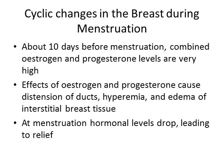Estrogen and progesterone levels change during menstruation, so they obviously cause breast changes during the menstrual cycle. About 10 days before menstruation, you're going to have a relatively high combined level of estrogen and progesterone. Because of those high combined levels, you're going to have distension of ducts, increased blood flow through the breast, and edema in the interstitial breast tissue. That is why just before menstruation some women have slightly enlarged and also tender, painful breasts. Once those hormone levels drop at menstruation, the breast shrinks again and there's relief of symptoms.